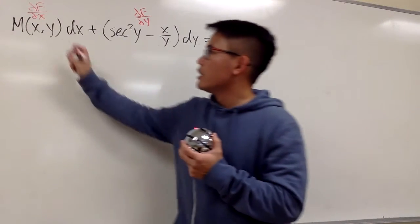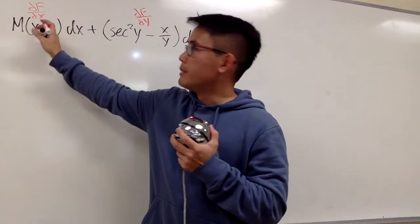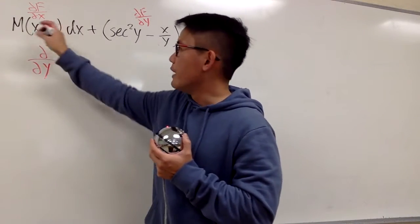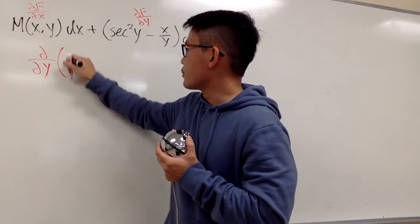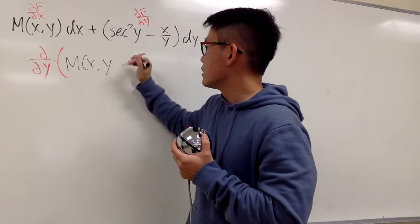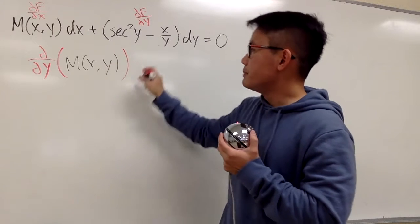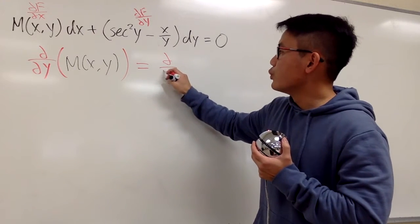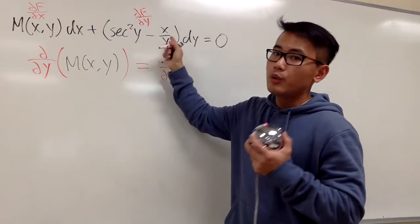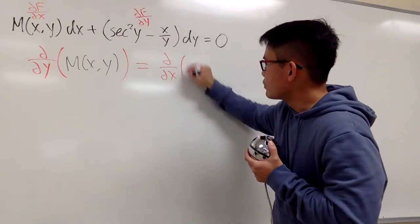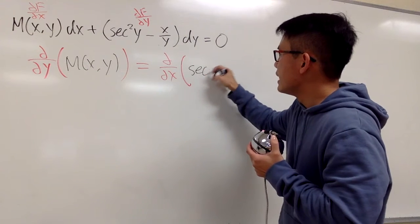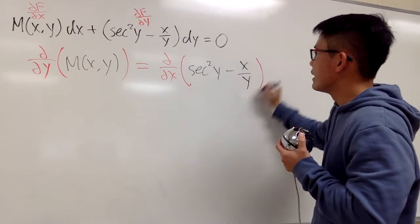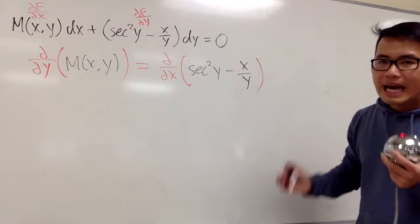That means this was the partial with respect to x already. Now, if I take the partial with respect to y of m, this must be the same as when we take the partial with respect to x, because this was with respect to y earlier. The partial with respect to x of secant squared y minus x over y — this is what we must have.